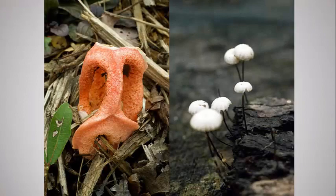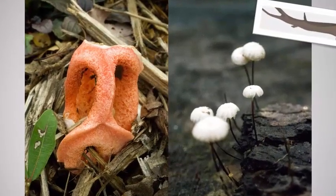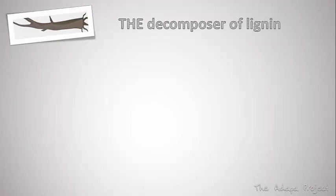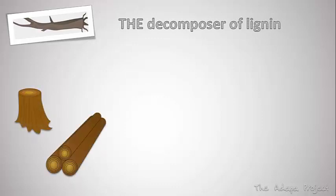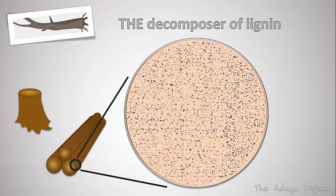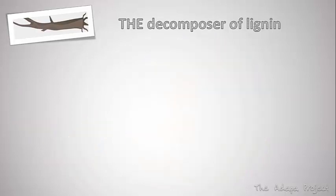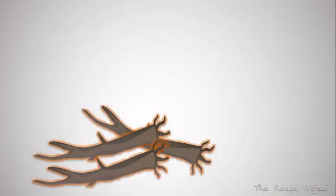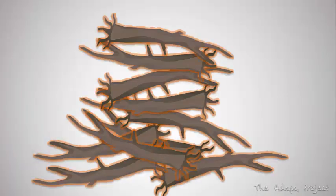These two fungi are saprotrophs. They digest dead wood and release nutrients into the environment. Saprotrophic fungi are very important for terrestrial habitats, especially forests, because they are the decomposer of lignin. Lignin occurs in wood, more precisely in the cell walls of woody parts of plants. It is what makes wood hard. Lignin is one of the most abundant molecules on Earth, but also one of the slowest to decompose. Saprophytic fungi can break down lignin much more efficiently and, in that process, give nutrients back to the system. Without fungi, dead trunks and branches would just pile up and it would take a long time until nutrients trapped in lignin would be released to the forest.